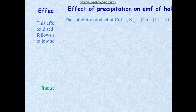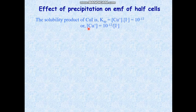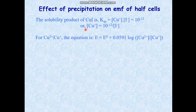This is explained by the solubility product of cuprous iodide. The Ksp of CuI is 10⁻¹². The cuprous ion concentration can be expressed as 10⁻¹² divided by the iodide ion concentration. This is the actual concentration of Cu⁺ in solution, and this value will replace the Cu⁺ concentration in the Nernst equation.